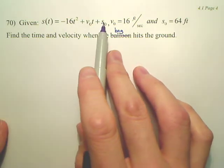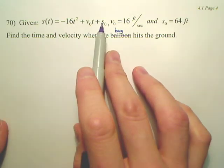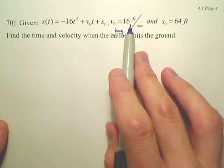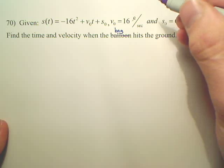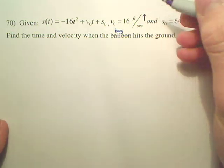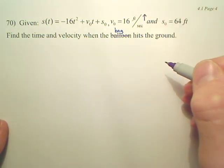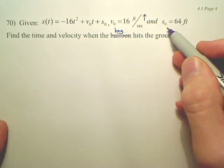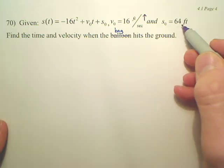Again, you're given this formula, the position formula. There's a balloon going up at 16 feet per second, so this is actually going up. Whenever you have positive, it's up, negative's down. It's released going upward, and the initial height of the balloon when it's dropped is 64 feet.